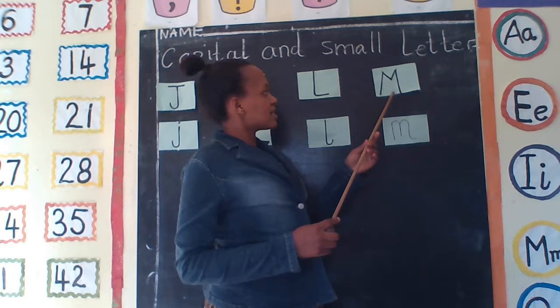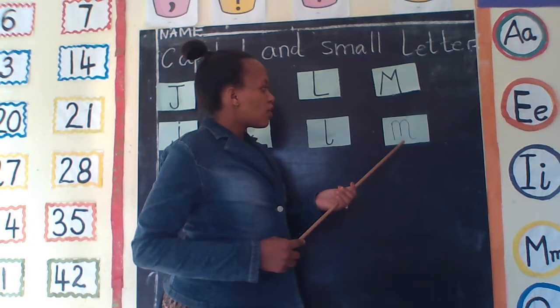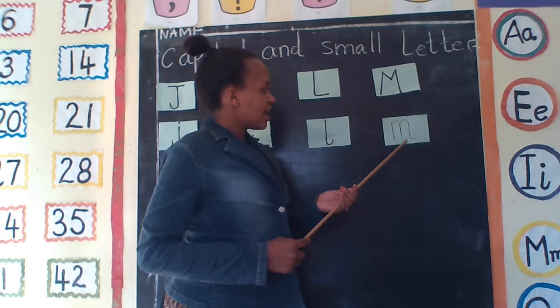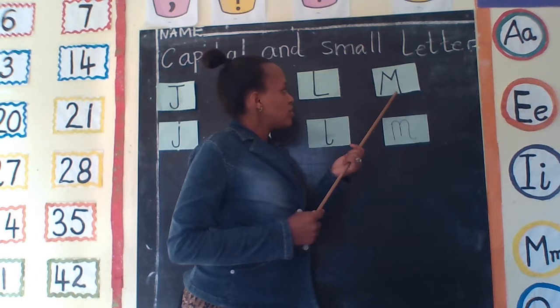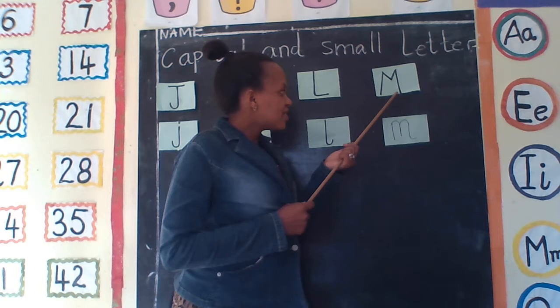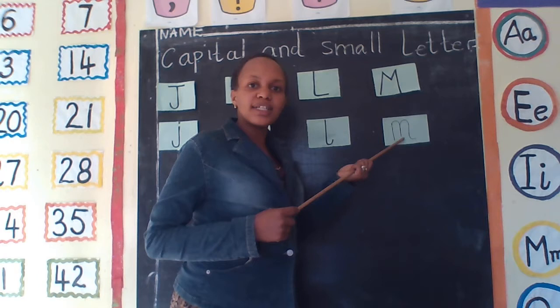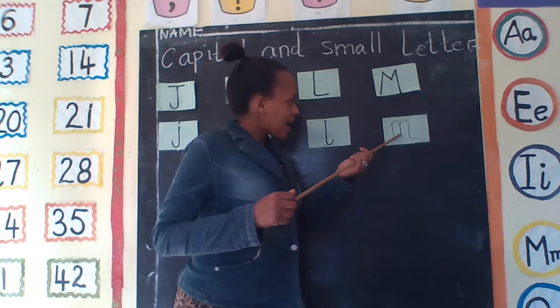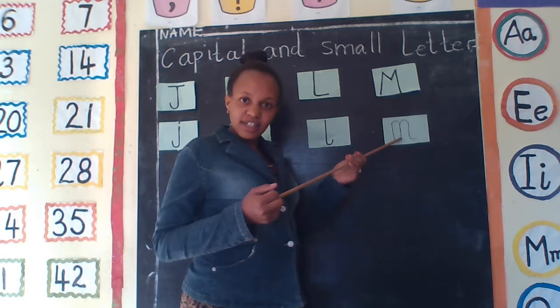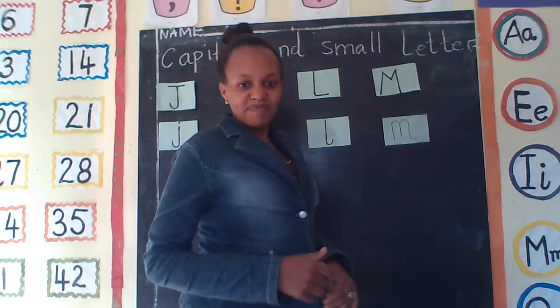Good, my friend. And also we have letter M. This is capital letter M. Small letter M. This is capital letter M and the small letter M. Everyone look at me, read after teacher. Say capital letter M. Very good. This is capital letter M and also this is small letter M. Are we together? This is letter M and also is sound M. Are we together? Very good.